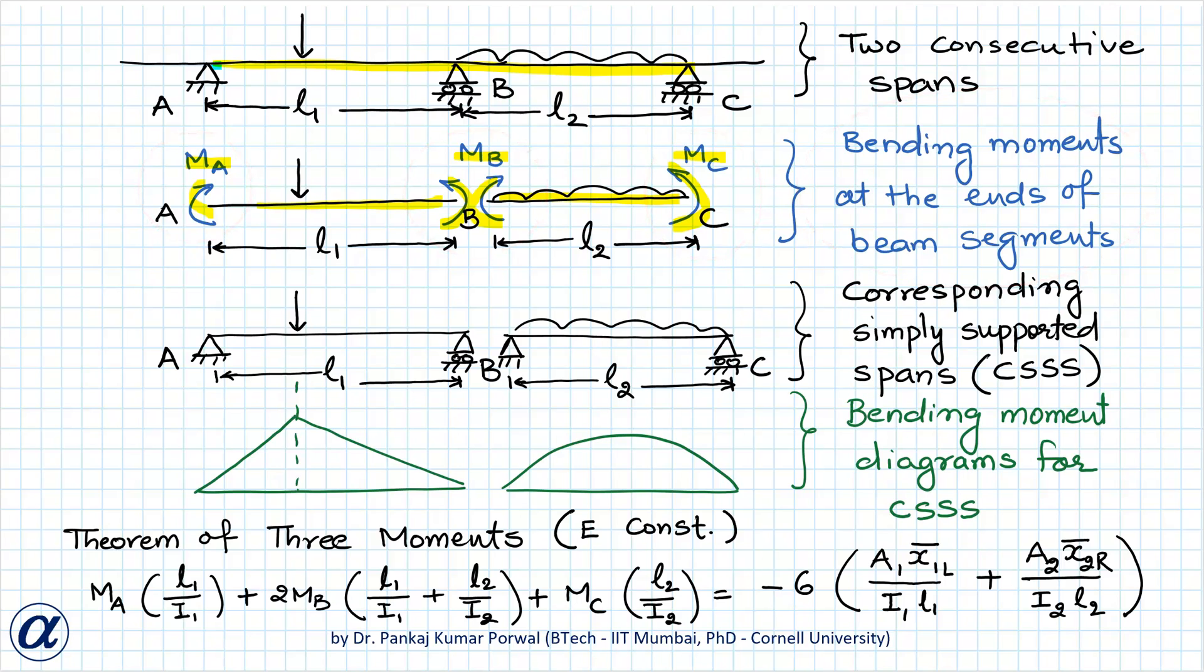And for these two consecutive spans, we can draw two corresponding simply supported spans that is beam AB and beam BC. They have same geometrical properties and loadings but rather than being continuous spans, they are simply supported individually and because they are simply supported beams, they are statically determinate and we can draw their bending moment diagrams using equilibrium equations. So, the theorem of three moments relates the bending moments at the ends of beam segments of two consecutive spans to the bending moment diagram for corresponding simply supported spans.